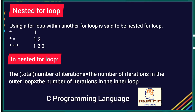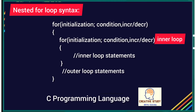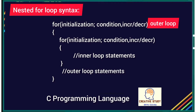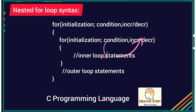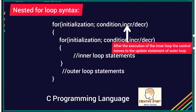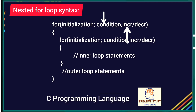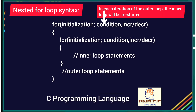Now let's learn nested for loops. Using a for loop within another for loop is called a nested for loop. These are used for working with two dimensions, such as printing stars or numbers in rows and columns. In a nested for loop, the total number of iterations equals the number of iterations in the outer loop multiplied by those in the inner loop. When the outer loop condition is true, the inner loop executes till its condition becomes false, then control moves to the outer loop's update statement.